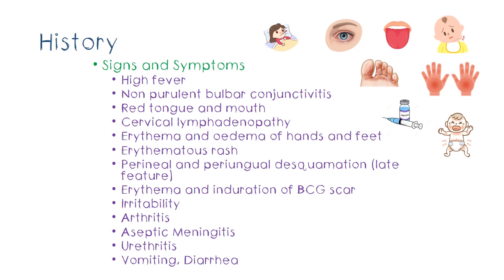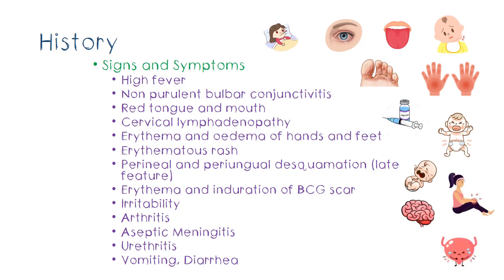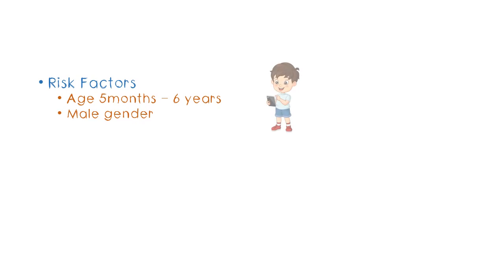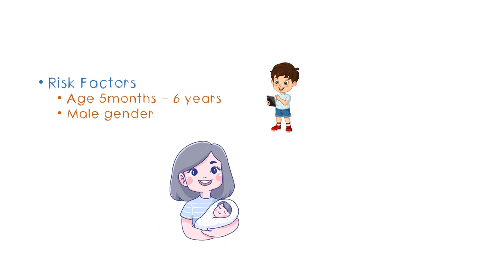You can get perineal and periungual desquamation where the skin peels off, and erythema or induration of the BCG scar. You can also get irritability in small children and different sorts of presentations such as arthritis, aseptic meningitis, and urethritis, as well as vague symptoms of vomiting and diarrhea. This condition is usually seen in boys between the ages of five months and six years. One of the reasons it may not be seen in younger children less than four months is that maternal antibodies provide protection to the baby.